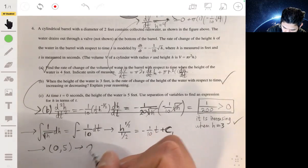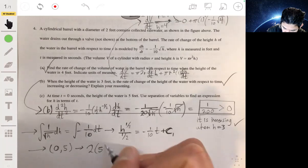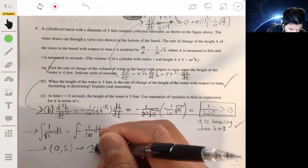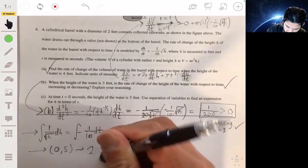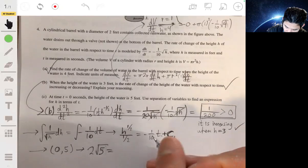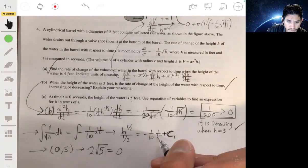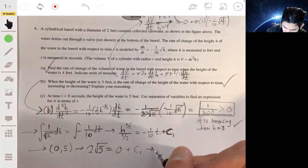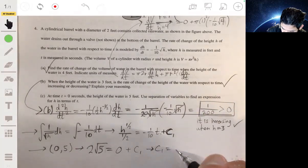This becomes two h. So two times five to the one-half, or two times. Let me just put square root of five. Two times the square root of five equals, this becomes zero, equals c1, right? So c1 is two root five.